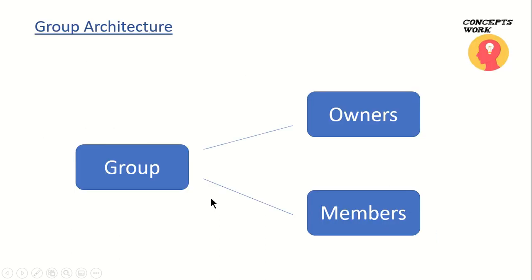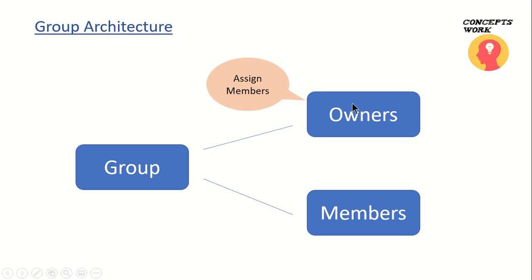Groups in Azure Active Directory have owners and members. The basic difference is that if you are an owner of a group you will be able to assign members. By default every user can create a group in Azure Active Directory, but there are settings from which you can block them from creating a specific type of group.